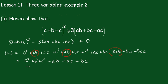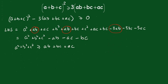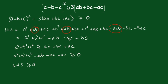Now, if you recall, we know that a squared plus b squared plus c squared is greater than or equal to ab plus bc plus ac. Which of course means that a squared plus b squared plus c squared minus ab minus bc minus ac is greater than or equal to 0, which means the left-hand side is greater than or equal to 0, and therefore our inequality is true.